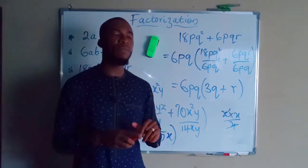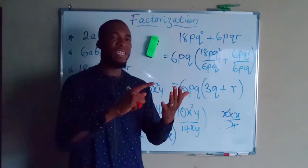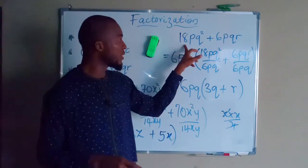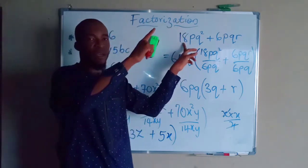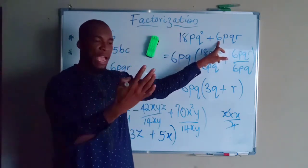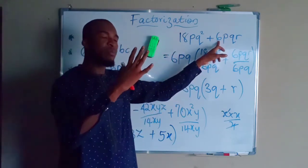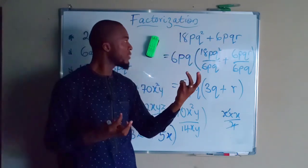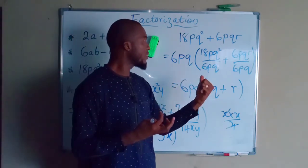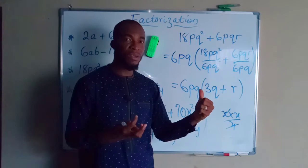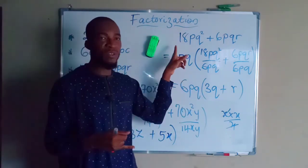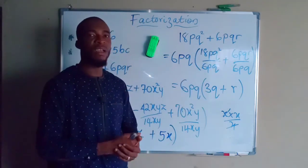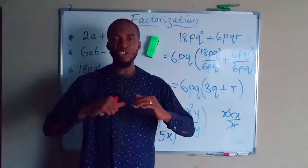If you don't know how to find the highest common factor, the best way is to list all the factors of each number. For example, list all numbers that can go into 18 without remainder: 1, 2, 3, 6, 18. Then do the same for 6: 1, 2, 3, 6. The greatest factor they have in common is 6, so 6 is the GCF of 18 and 6. Repeat this process for the other terms.